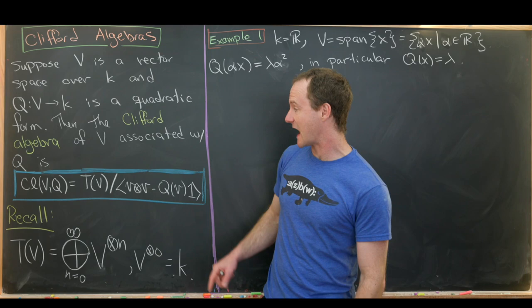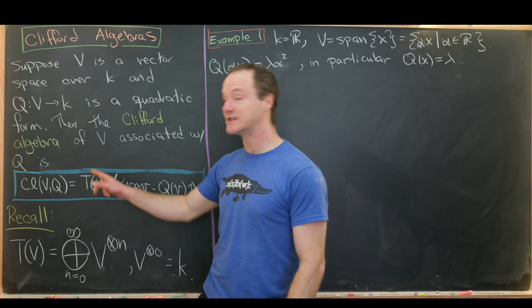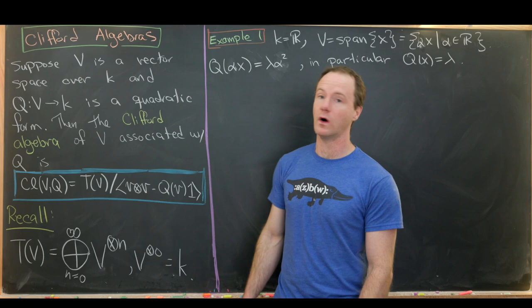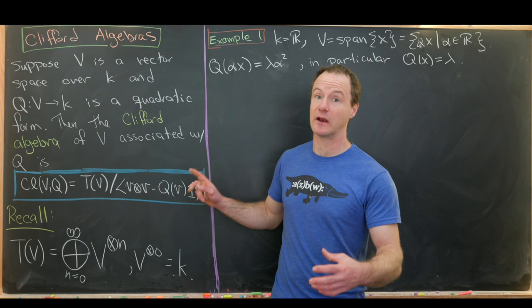So it'll be CL(V,Q), and it's the tensor algebra on V modded out by the ideal generated by things of the form v⊗v minus Q(v)·1. So in other words, inside of this Clifford algebra, if you multiply a vector with itself, you get a multiple of a constant — specifically, the quadratic form evaluated at that vector.